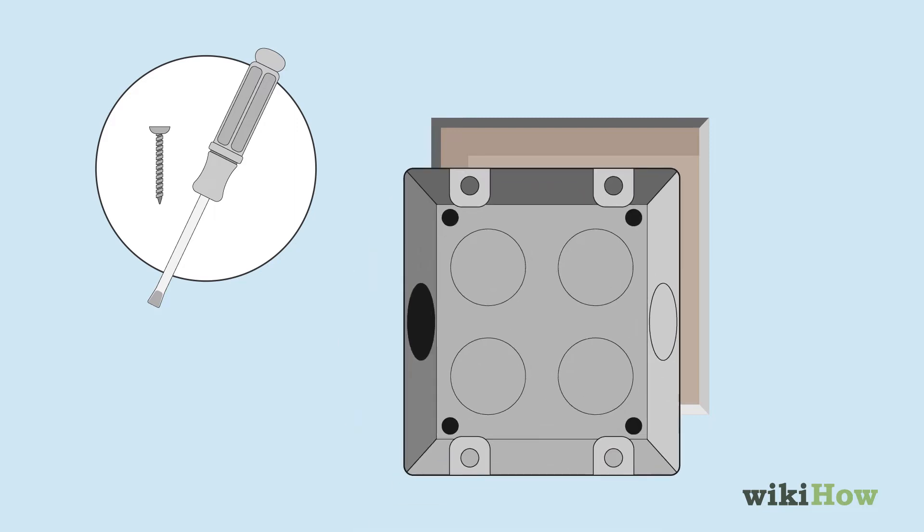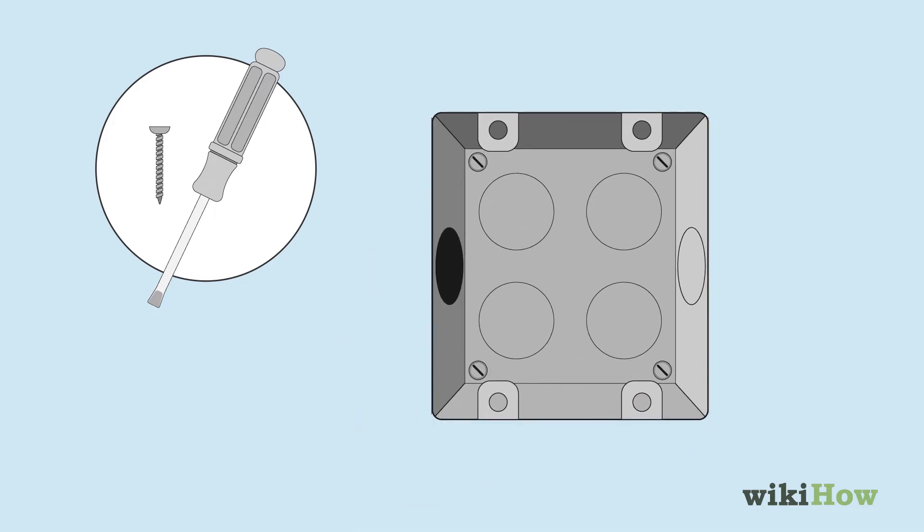Push the outlet box into the hole and screw it in securely. Then pull about 1 foot, 30 centimeters, of the cable out through the hole in the box.